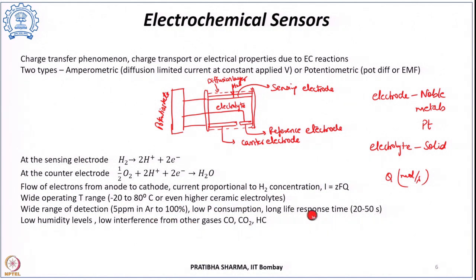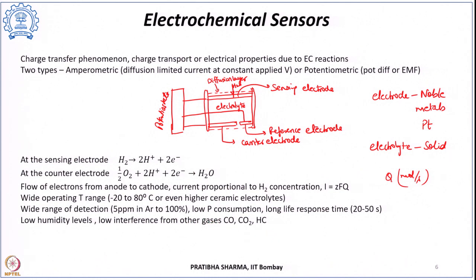A major challenge is that these sensors should be subjected to low humidity levels, and interference from other gases like carbon monoxide, carbon dioxide, and other hydrocarbons should be minimized. The potentiometric electrochemical sensor measures the potential difference or EMF between two electrodes under zero-current conditions, with the electrode potential calibrated to hydrogen gas concentration.